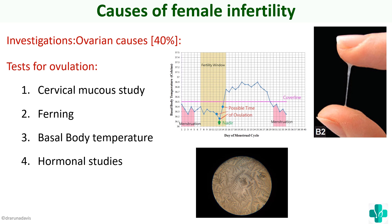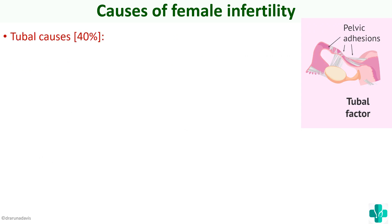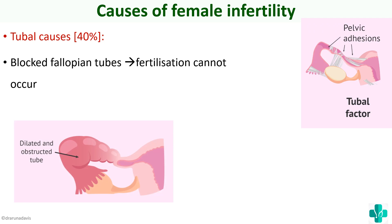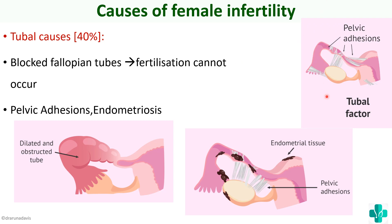Next we move on to tubal factors — the different tubal causes of infertility. The first cause is blocked fallopian tubes, where the ovum cannot travel to the uterus and the sperm cannot reach the other side, so fertilization does not take place. A good example is pelvic adhesions, which can be due to previous surgery, endometriosis causing pelvic adhesions, or endometriosis itself causing obstruction in the fallopian tube — all preventing the sperm from reaching the ovum.